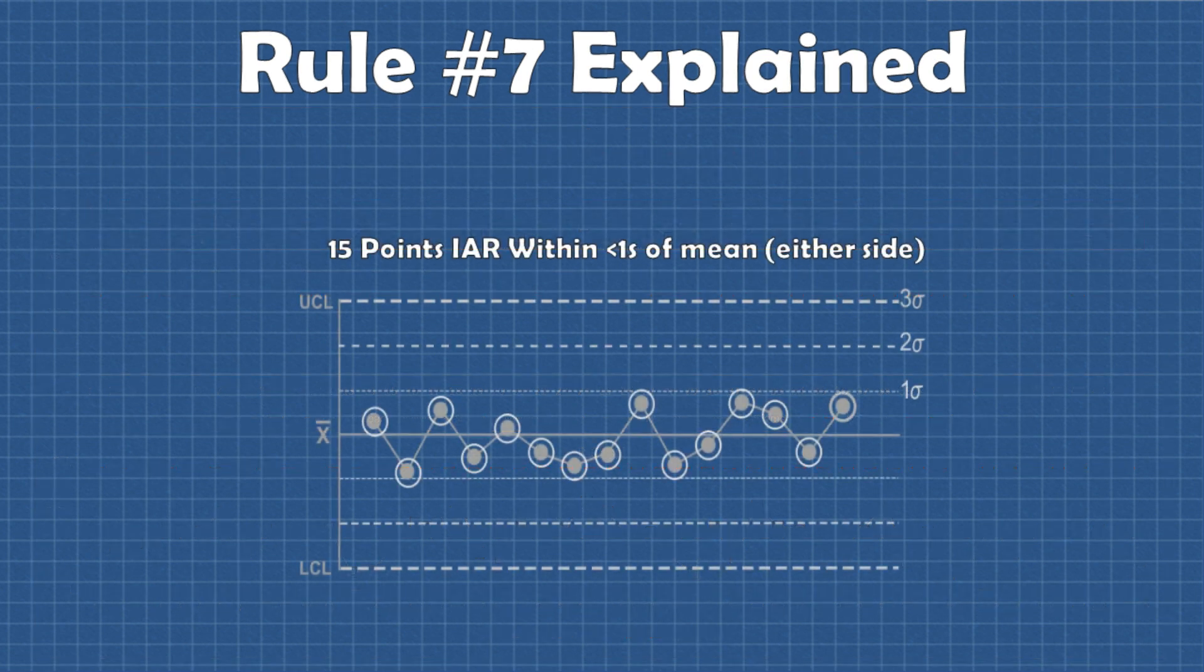So basically what's happening in this case is there are two separate sub-processes that are being sampled from which results in all subgroup sample sets averaging close to the mean. Now rule number seven may actually be an indication that the process variation has actually been reduced through some sort of process improvement or change so keep that in mind as well.